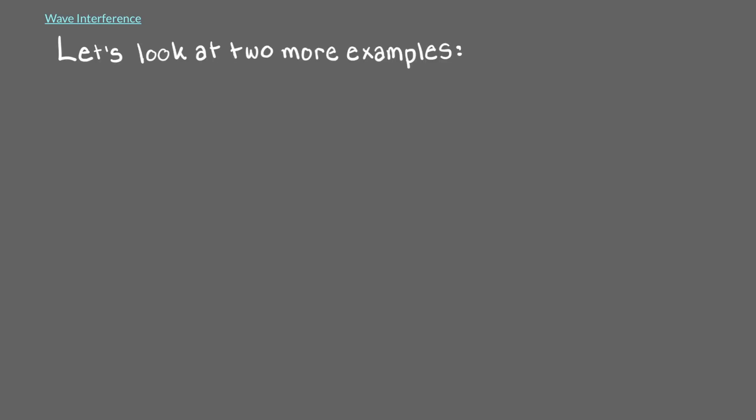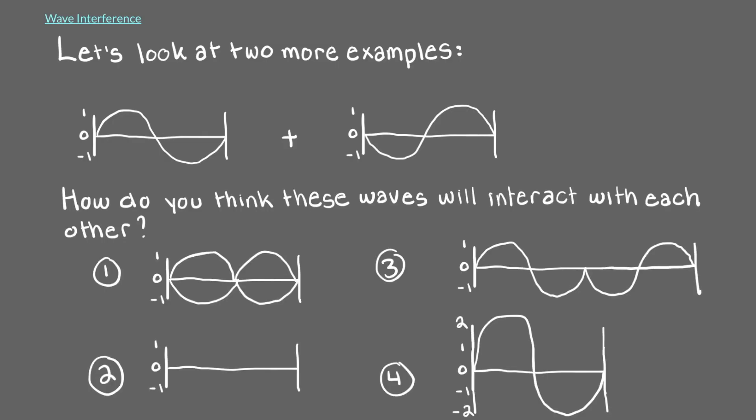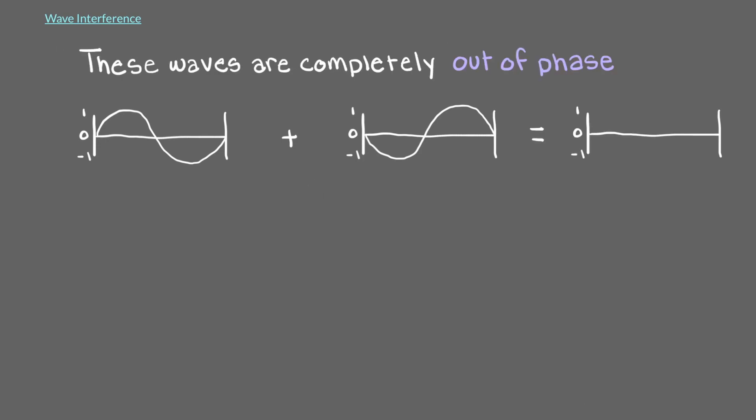Let's look at two more examples using waves that are a little more complicated. Even though they're more complicated, the principles are still the same. How do you think these waves will interact with each other when they come together? Notice that these waves are completely out of phase. Since the wave on the left has its first peak as plus 1 and its second peak as minus 1, and the wave on the right has its first peak as minus 1 and its second peak as plus 1, these waves are completely out of phase and will cancel out.